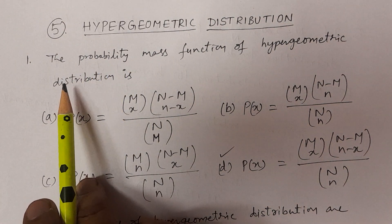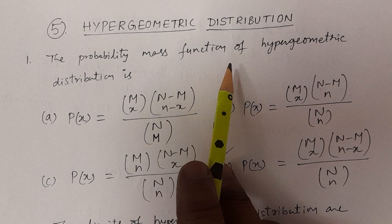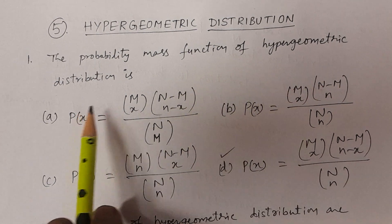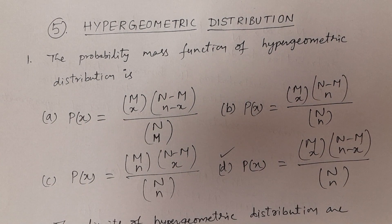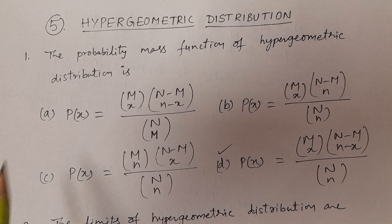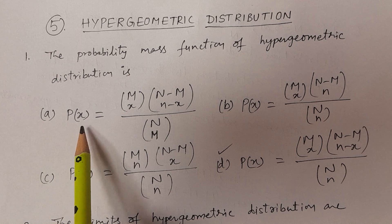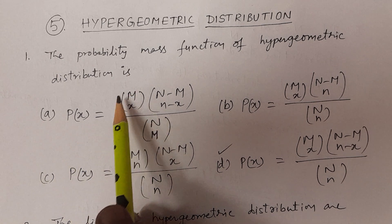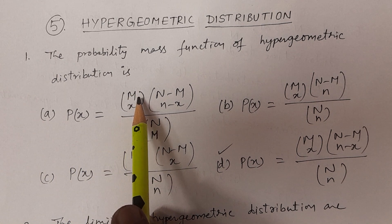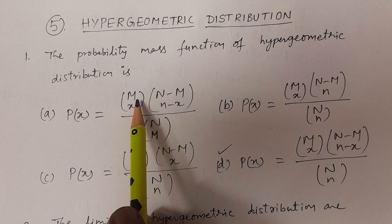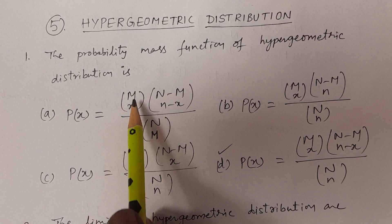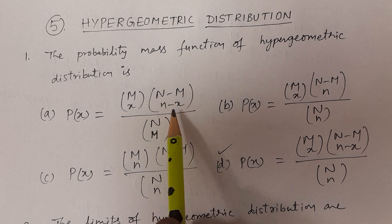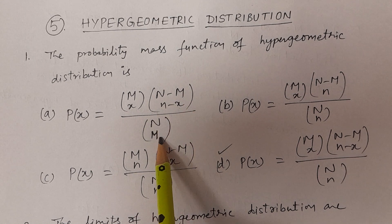Question number one: What is the probability mass function of hypergeometric distribution? Option A: P(X) = MCX · (N minus M)C(N minus X) divided by NCM.